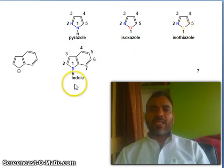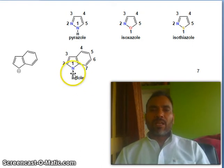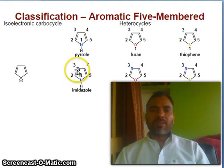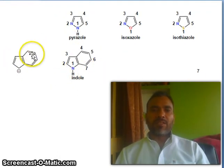And indole — numbering starts with the small ring, NH, like pyrrole. And its analog — this is a homocyclic fused system.